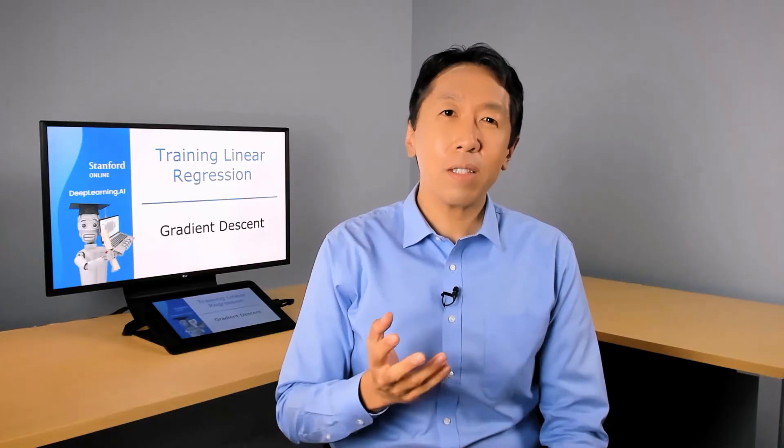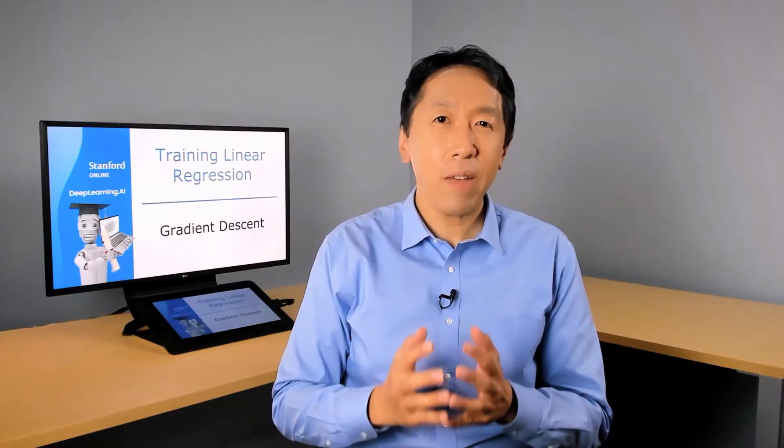It turns out there's an algorithm called gradient descent that you can use to do that. Gradient descent is used all over the place in machine learning, not just for linear regression, but for training some of the most advanced neural network models, also called deep learning models. Deep learning models are something you learn about in the second course. So learning this tool of gradient descent will set you up with one of the most important building blocks in machine learning.